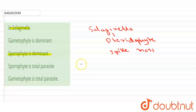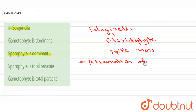In Selaginella, a distinct phenomenon known as alternation of generation can be seen, in which two distinct phases occur in the life history of the plant.